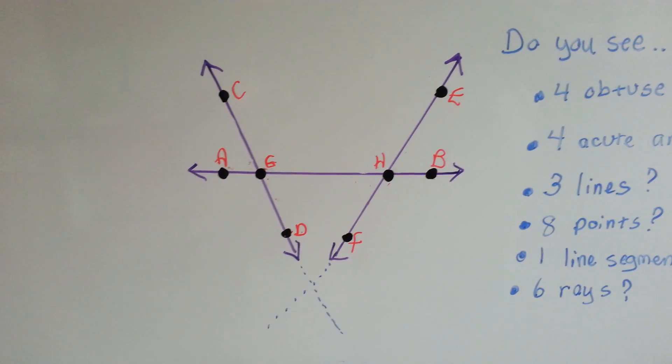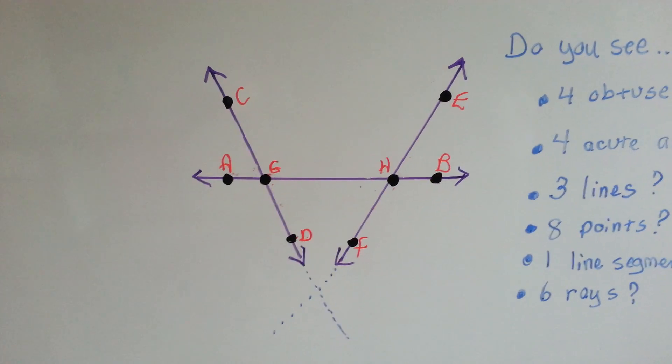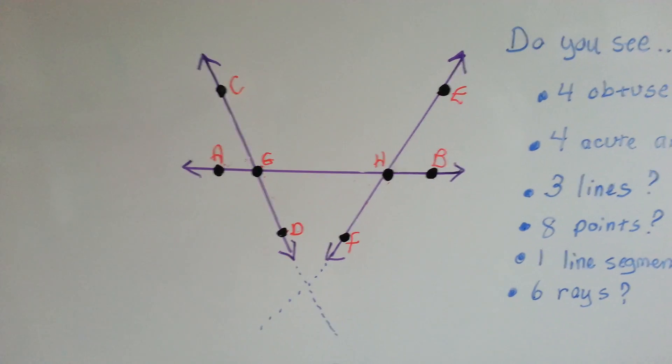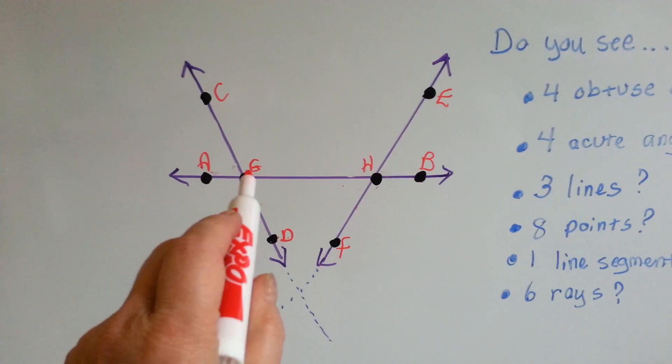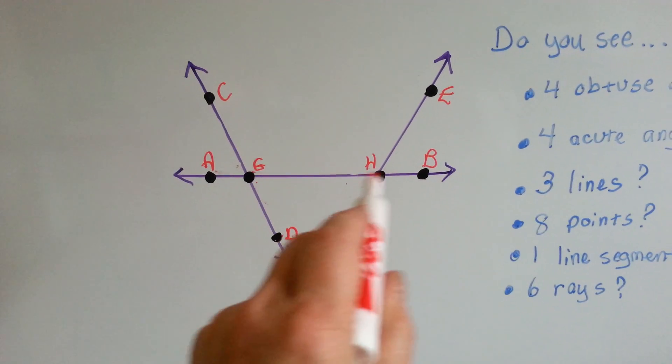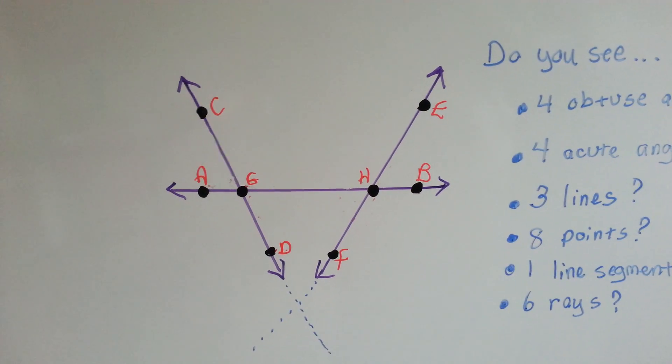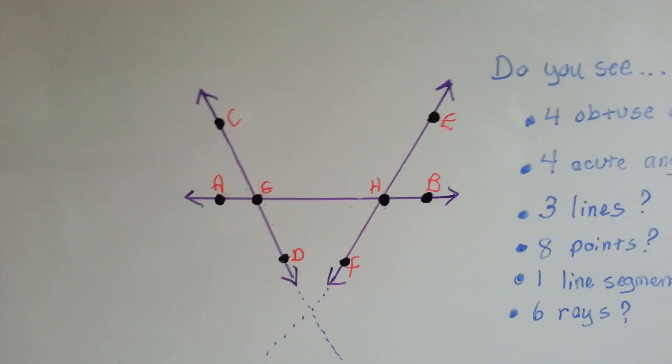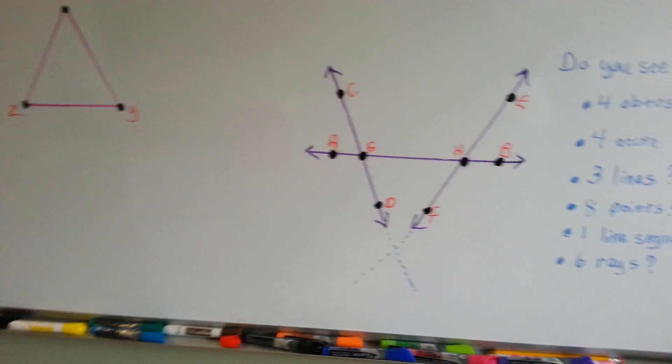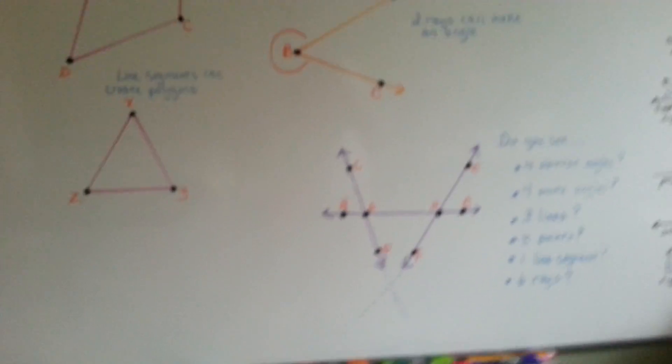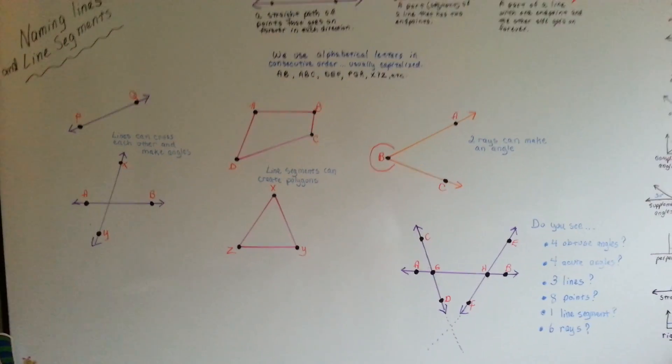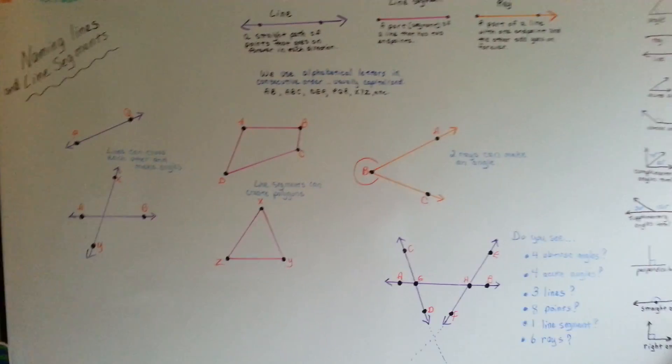So if I said, where is ray GC? You'd say, oh, it's right here from here to here. And if I said, where's line segment GH? You'd say, oh, it's right here. That's a line segment GH. And if I said, where's line EF? You'd say, oh, it's right there. So when we're doing geometry and we're working with the lines and line segments, we want to be able to identify which ones the homework is talking about. So we have to label them. We have no choice.